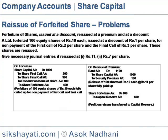Reissue of forfeited shares. Forfeiture of shares issued at a discount, reissued at a premium and at a discount. A limited forfeited 100 equity shares of Rs.10 issued at a discount of Rs.1 per share for non-payment of first call of Rs.2 per share and final call of Rs.3 per share. These shares are reissued. Leave necessary journal entries if reissued at Rs.11 and at Rs.7 per share.